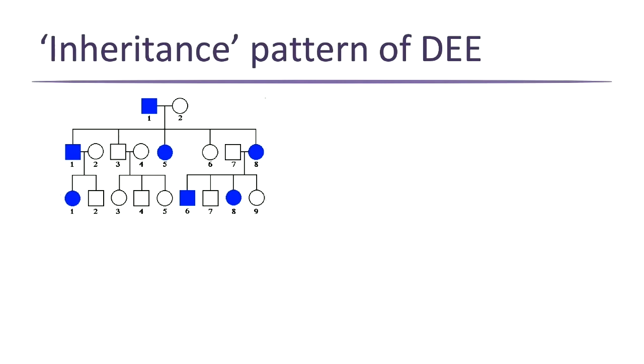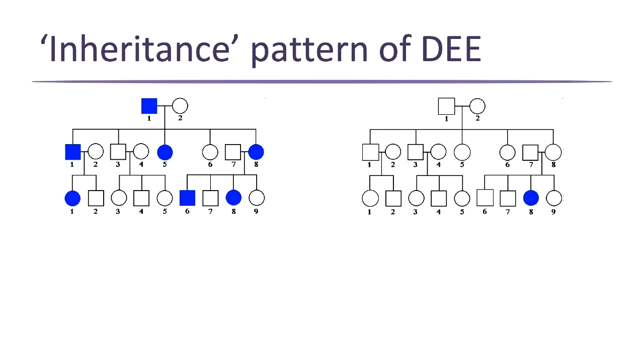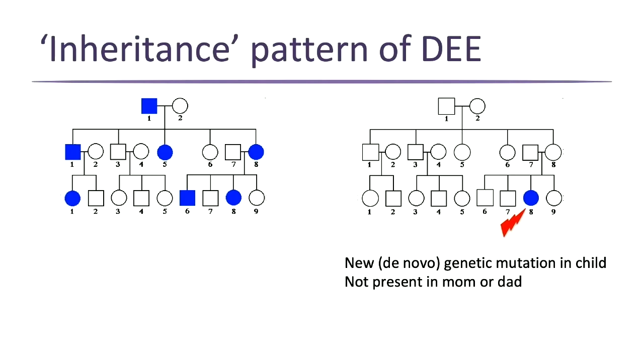Importantly, DEE tends to occur in families where nobody has epilepsy until — boom — one child. There's no family history. In the past we thought this must not be genetic. But what we know today is that it is genetic most of the time — it's a new genetic mutation that happens in the DNA of that child, and neither parent has that genetic change. So it's not present in mom or dad — it only happens in this child and causes disease.